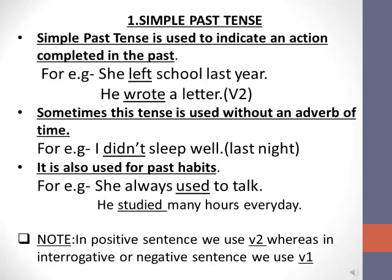Simple past tense is also used with adverbs of time. However, sometimes this tense is used without an adverb of time — where time is not mentioned, we still use it. For example: 'I didn't sleep well.' We of course know when — last night. So the adverb of time is missing, but we still know they are talking about last night. This example makes clear that the tense can be used without an adverb of time.